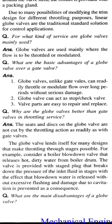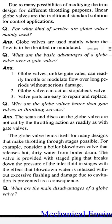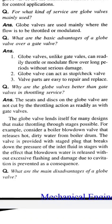Why are globe valves better than gate valves in throttling service? Answer: The seats and discs on the globe valve are not cut by throttling action as readily as with gate valves. The globe valve lends itself to many designs that make throttling through stages possible. For example, consider a boiler blowdown valve that releases hot, dirty water from the boiler drum. The valve is provided with a staged plug that breaks down the pressure of the inlet fluid in stages, with the effect that blowdown water is released without excessive flashing, and damage due to cavitation is prevented as a consequence.